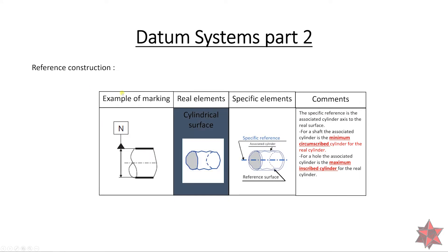This is an example of the way a datum is marked on the drawing. This is the real element — a cylinder surface — and this is the specific element. We have here the specific reference, which is the axis of the associated cylinder — the defined cylinder or the CAD data — and the reference surface is the real surface of the cylinder. The specific reference is the associated cylinder axis to the real surface.